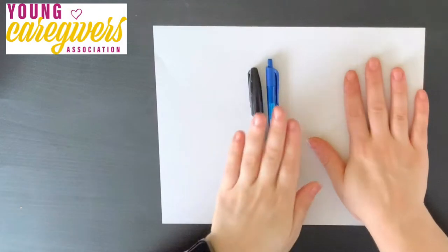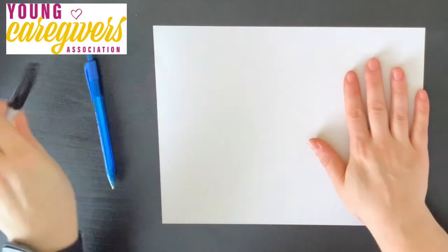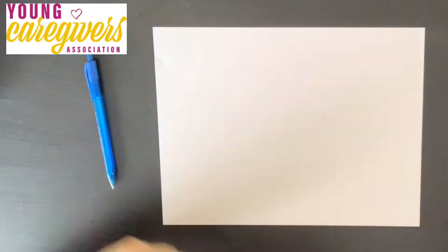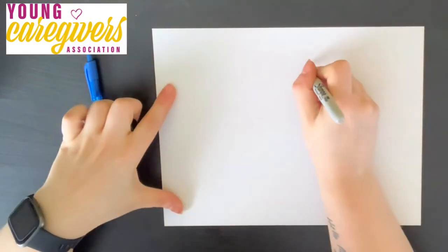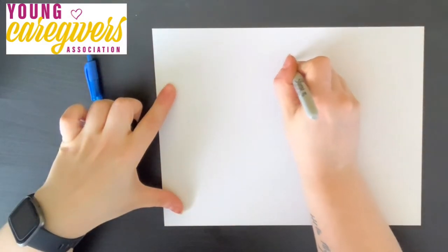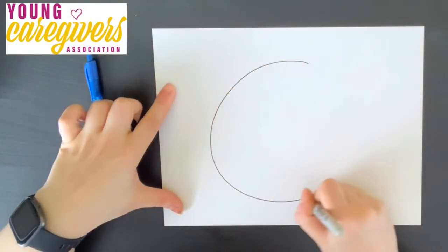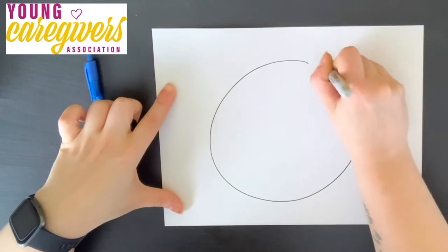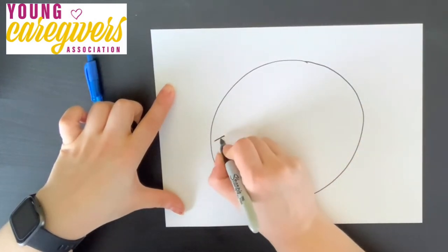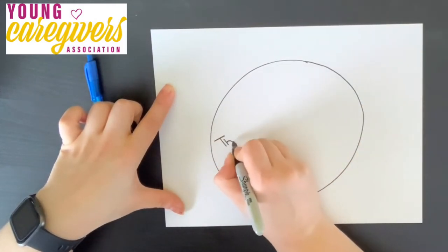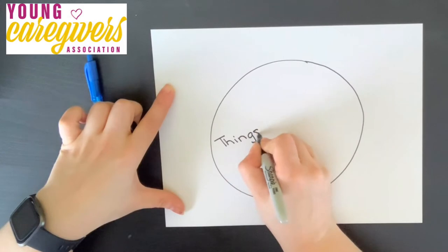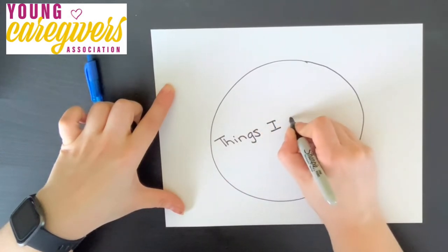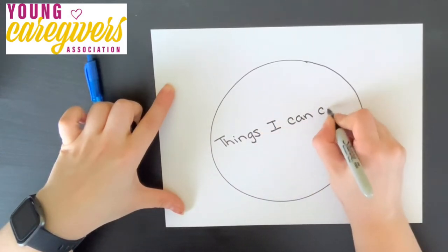For this activity, all you're going to need is a piece of paper and some writing utensils. Take a darker colored writing utensil and draw a circle right in the center of your page. This circle should be about the same size as the page, a little bit smaller to leave space to write around. Then inside that circle, write the words: things I can control.